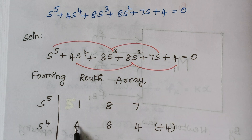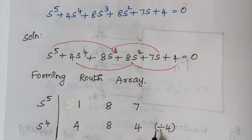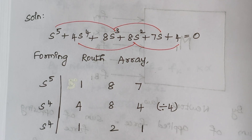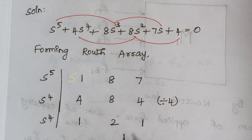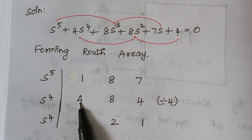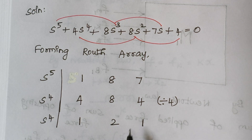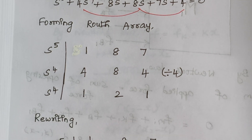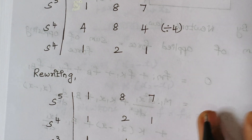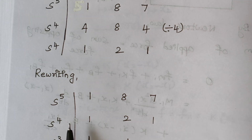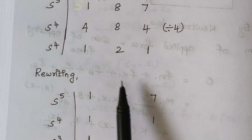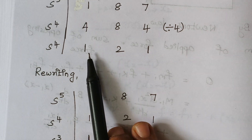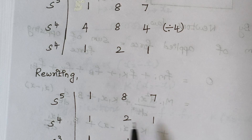The S⁴ row contains elements which are divisible by 4, so I am dividing that row. Rewriting this row: 4 divided by 4 is 1, 8 by 4 is 2, and 4 by 4 is 1. Now we are framing our Routh array. This is the S⁵ row and this is the modified S⁴ row: 1, 2, and 1.